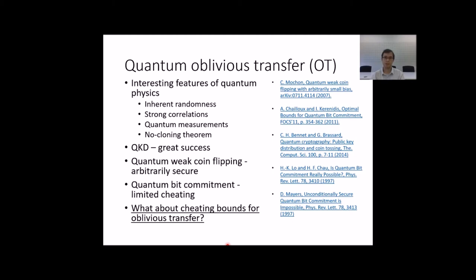It is reasonable to ask whether we can use them to secure other tasks as well. It is, for example, known that weak coin flipping could be implemented arbitrarily secure. On the other hand, it is impossible to completely secure bit commitment. There is some probability of successful cheating. We know that it is also impossible to do oblivious transfer perfectly. But the cheating probability is still an open question.